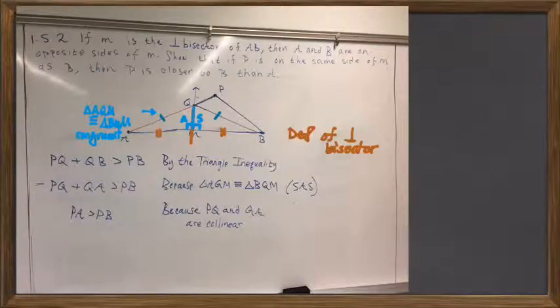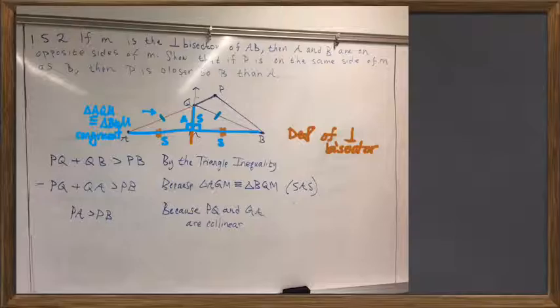Right, it's supplementary angle would be 90 degrees. And then, the third side, we get congruency of, again, by definition of perpendicular bisector, because AM was equal to BM. And so we had these two triangles, AQM and BQM, that are congruent. And as a result, AQ is equal to BQ.